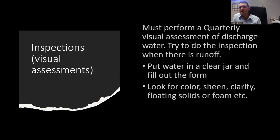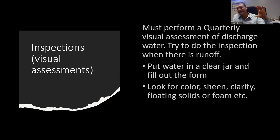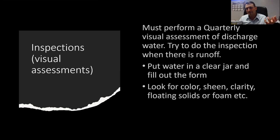As part of your inspections, you perform a quarterly visual assessment. You could do the inspection and then go back and do the visual assessment and collect your monitoring samples, but normally it's convenient to do it all at once. You put the water in a clear jar and look at it, then document on the form — there's an EPA SWPPP template with a form for this. You're visually screening the water for pollutants, including checking for odor. This has to be done once a quarter as well.